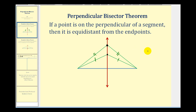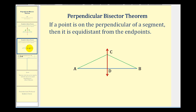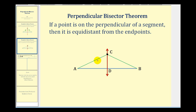Before we write our two-column proof, let's talk about our strategy. So if we consider point C, we want to prove that the length of AC is equal to the length of BC — or that segment AC is congruent to segment BC — given that this red line is the perpendicular bisector of the blue segment.